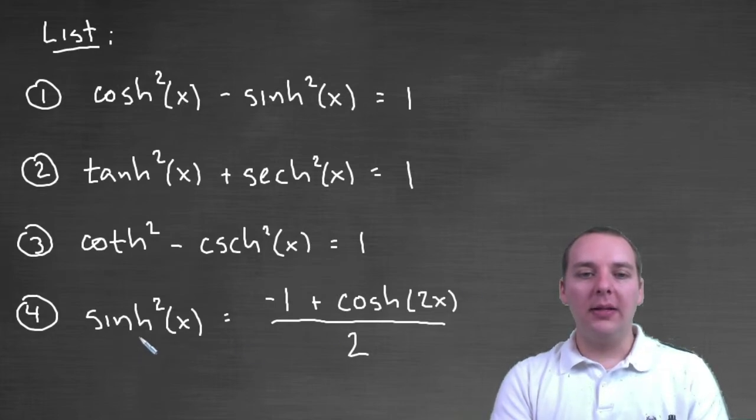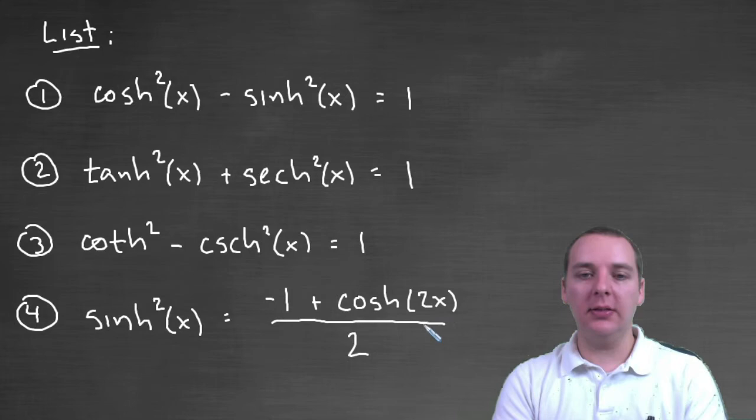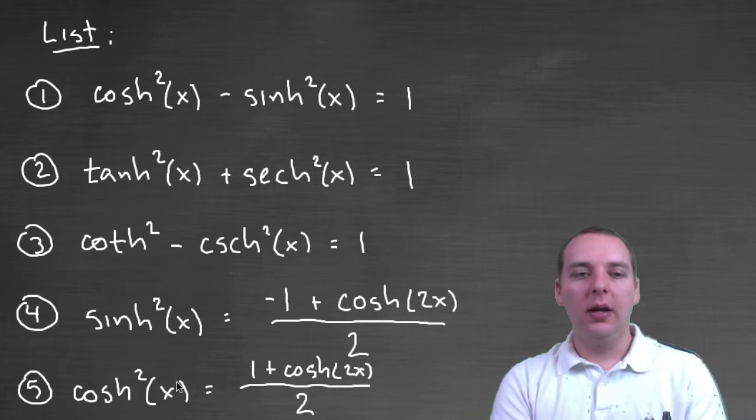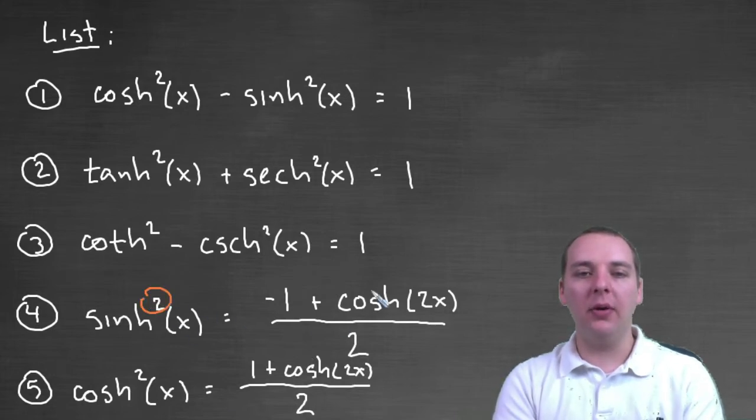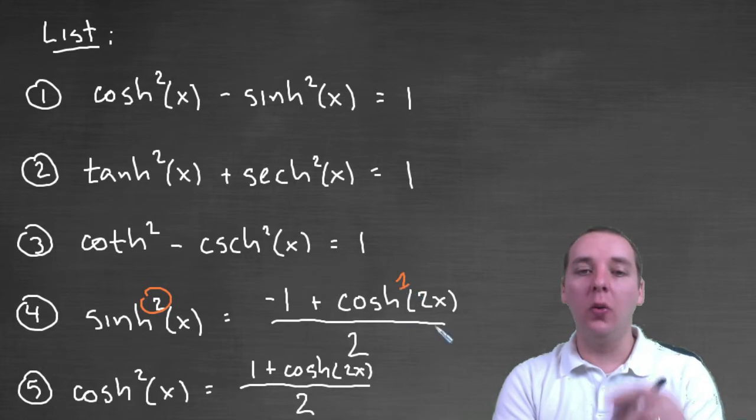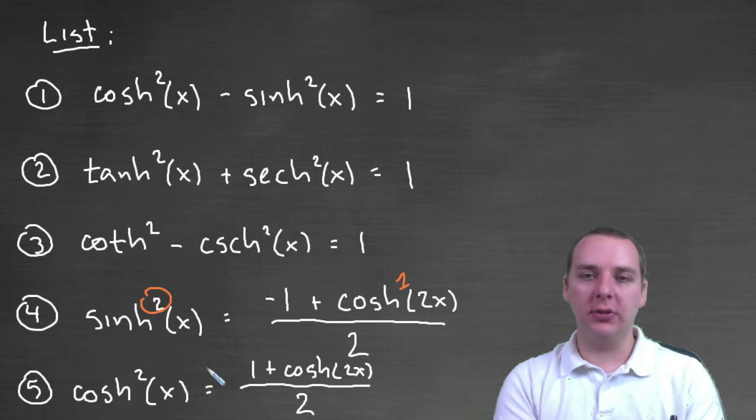Hyperbolic sine squared equals negative one plus hyperbolic cosine of two x divided by two. There's a close trig relative to this. Hyperbolic cosine squared is one plus hyperbolic cosine of two x over two. For the trig identities, we call these guys the power reducing formulas, because this has a power, and this doesn't anymore. This has a lower power. We've reduced the power from two to one. So you'll notice a strong similarity there to some well-known trig identities.